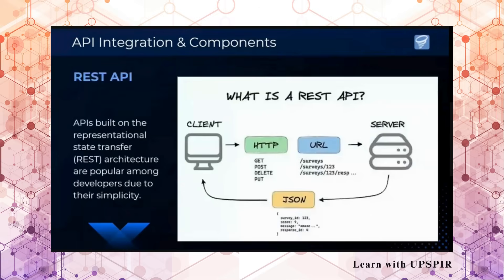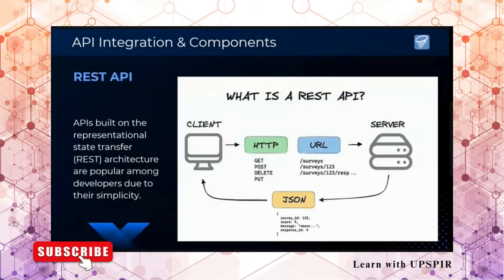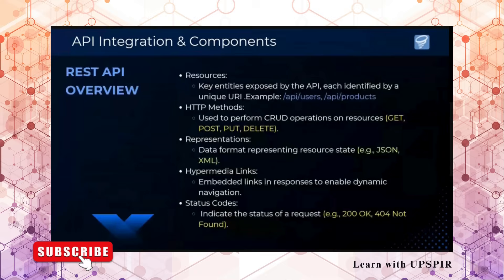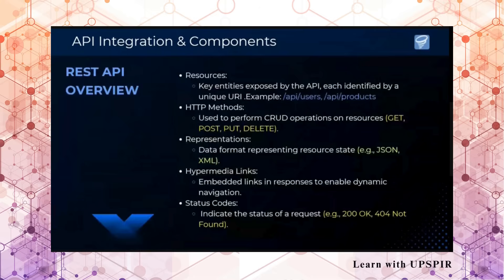In the case of a REST API, the client will do an HTTP request, send it to a URL, the URL will be received by the server, and the server will return the JSON response. This is a typical REST API framework. In REST API, we have resources, HTTP methods, representation, hypermedia links, and status codes.